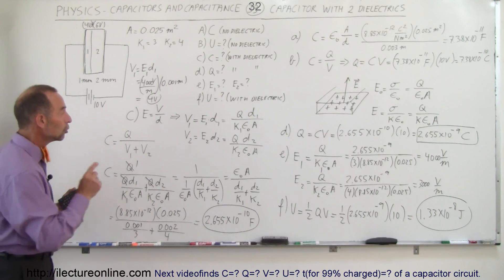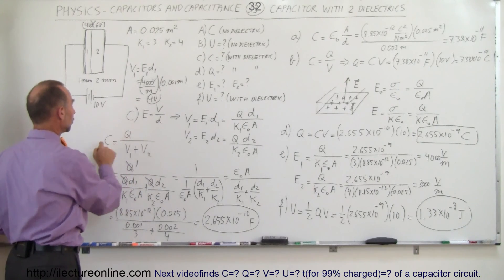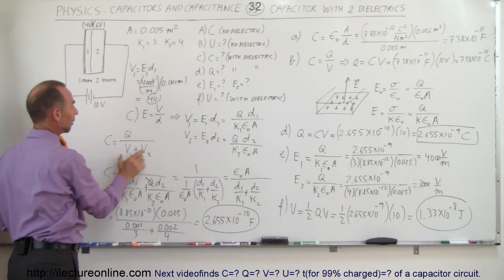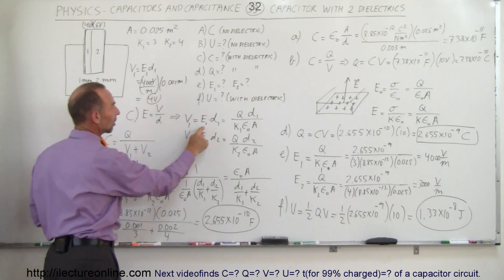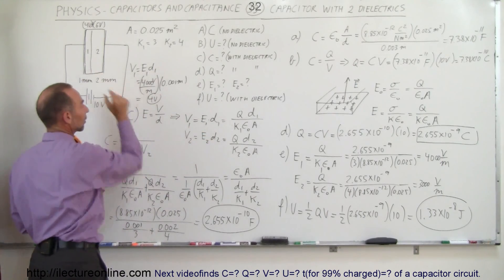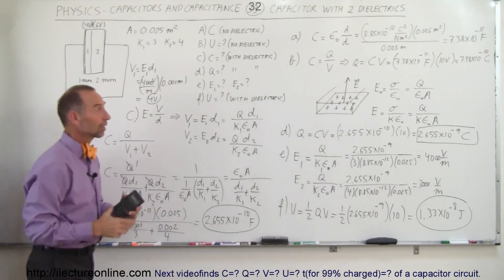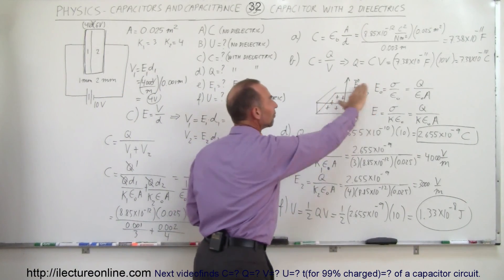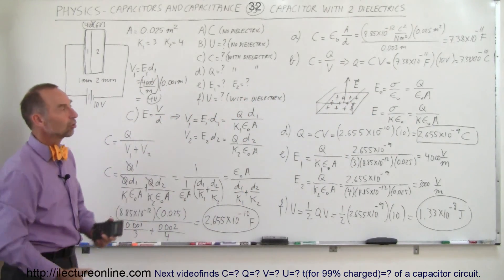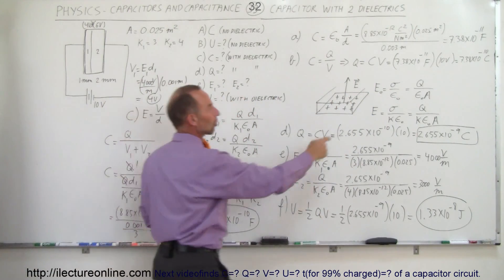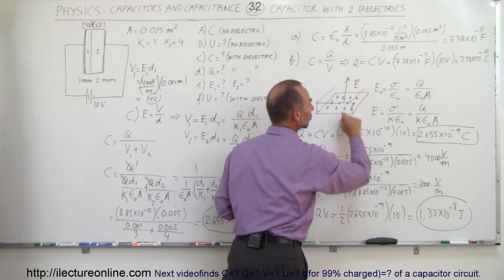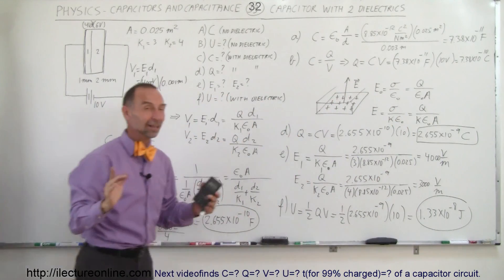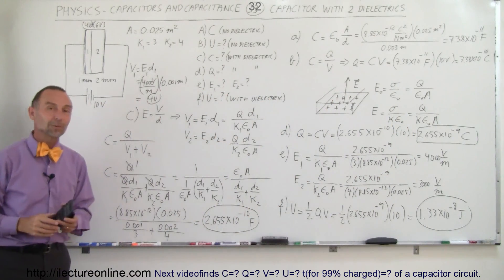The key trick when dealing with more than one layer of dielectric is to find capacitance as charge divided by the sum of voltages across each dielectric. Express each voltage as the electric field in that dielectric times its thickness. The electric field is found from charge density divided by k·ε₀, treating each capacitor plate as an infinite plate. That's how you approach these problems.